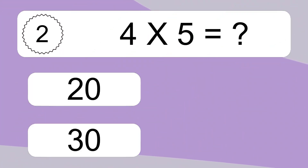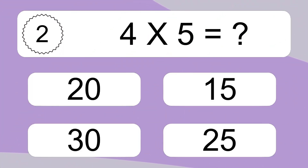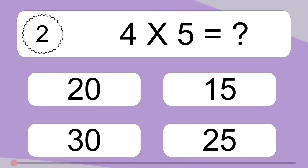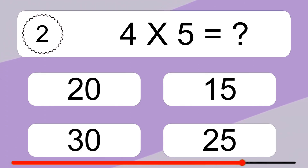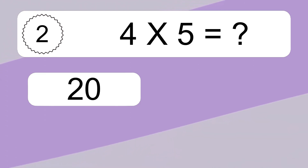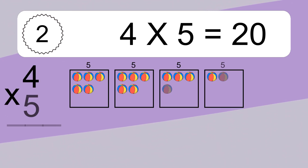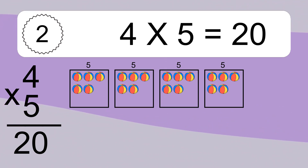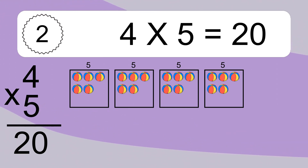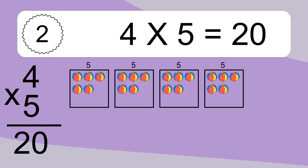4 times 5 equals what? 4 times 5 equals 20. We have 4 boxes, and each box has 5 colorful balls inside. If you count all the balls in all the boxes together, you will have 4 times 5 balls.